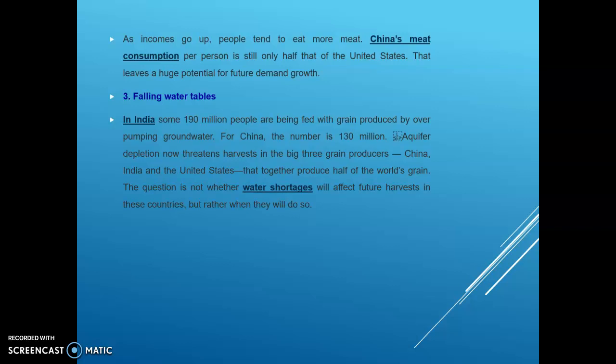From this slide you can understand that 190 million people are being fed with grain produced by over-pumping groundwater, and for China 130 million is also one of the threats to the harvest. Grain producers are facing great challenges. All these things are due to climate change, which may impact different regions and can affect sustainable agriculture production, especially in South Asian countries like India where the water table is going down.